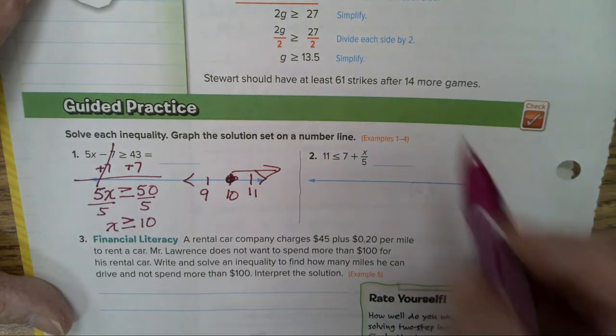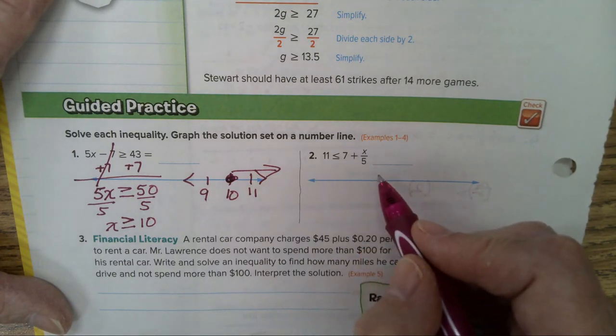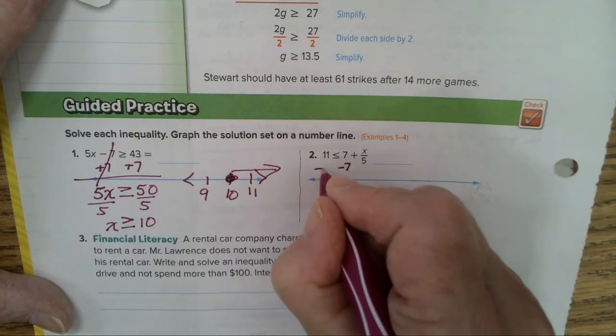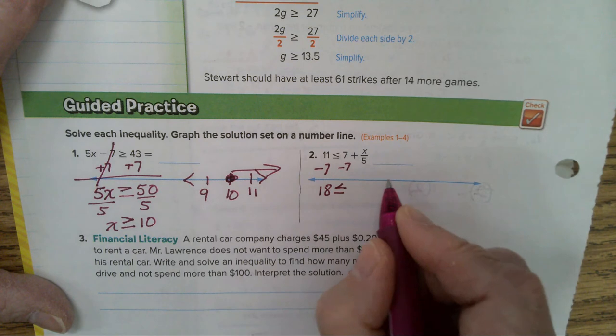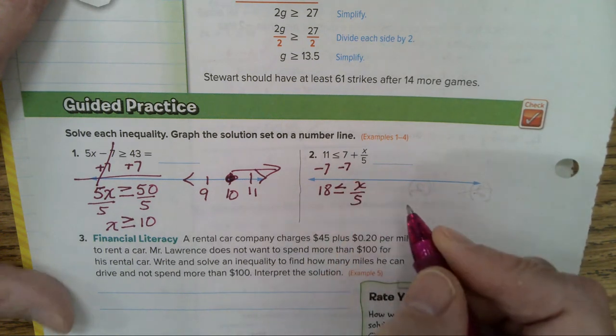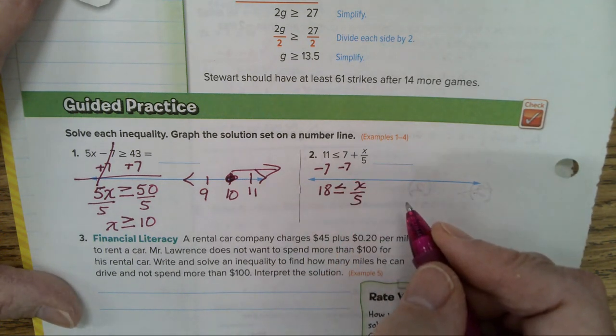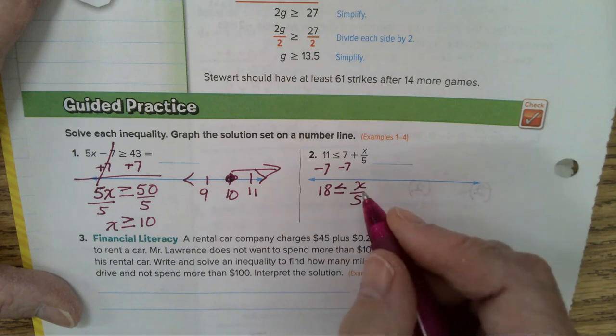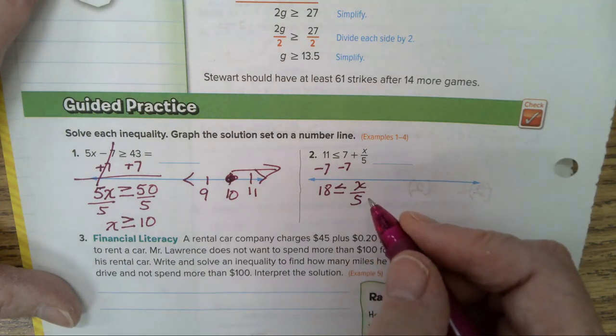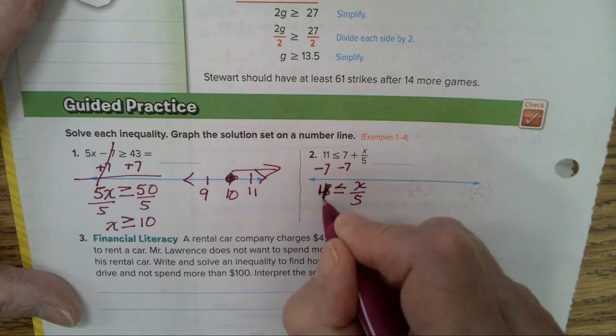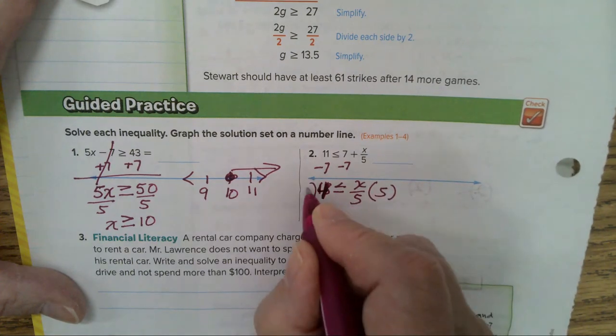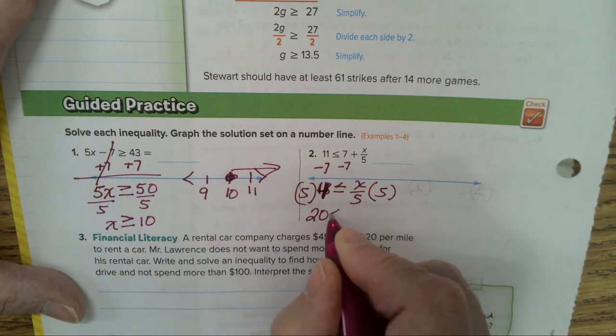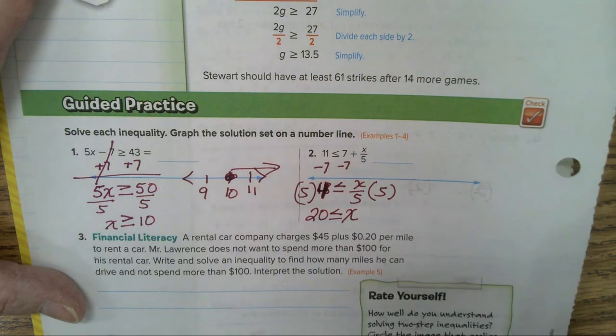I have to first get rid of my seven and then I'll multiply by a five. Add seven. Now I end up with 18 is less than or equal to x divided by five. Oh, I was supposed to subtract. Well, 11 minus seven is four. Thank you for catching that early. Now multiply by five, multiply by five. Twenty is less than or equal to x. Do we agree?